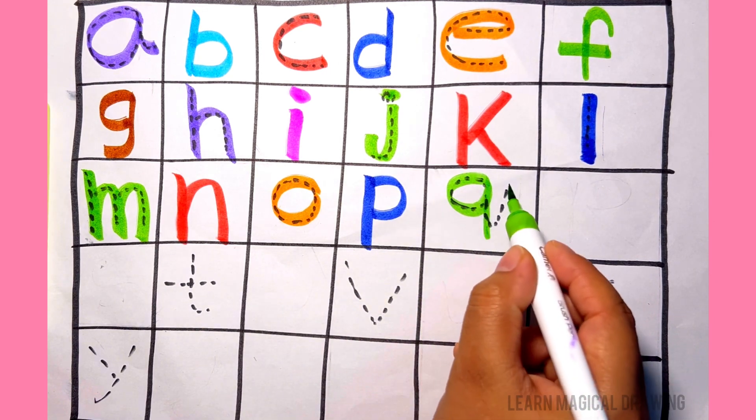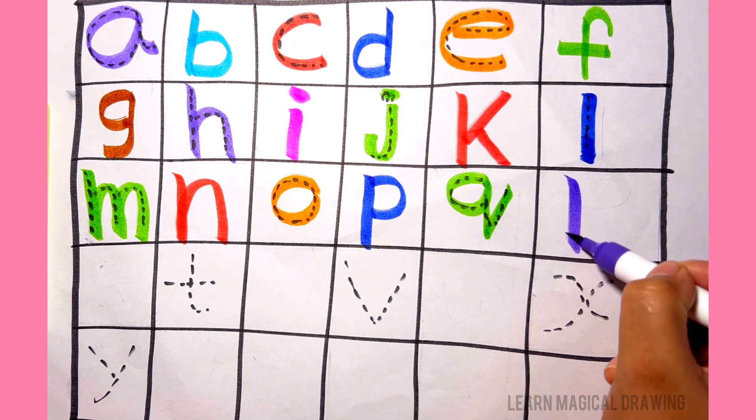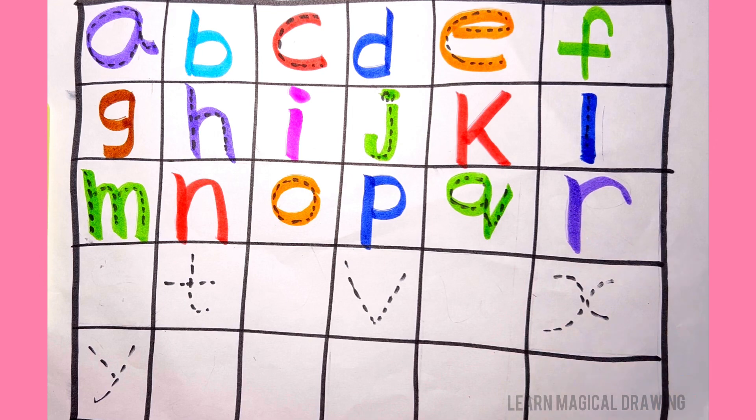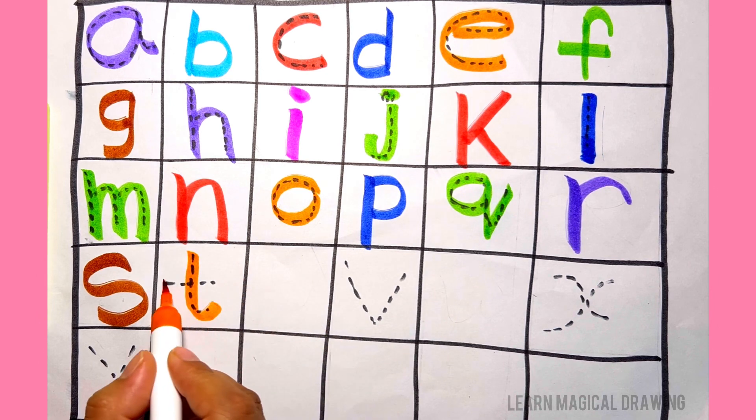Q. Q for Question Mark. R. R for Rambo. S. S for Sunflower. T. T for Table.